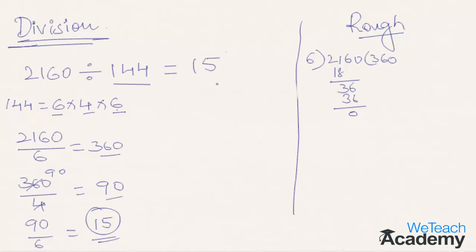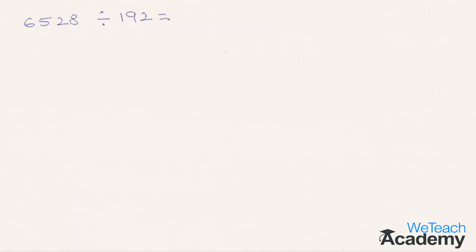So in this way, bigger calculations can be easily done by breaking the divisor into its own factors and then calculating with each factor. You can easily find the result. So let us try one more example. Let us divide the number 6528 by 192. Now break the divisor, that is 192, into its own factors. 192 can be broken into factors like 8, 6, and 4.